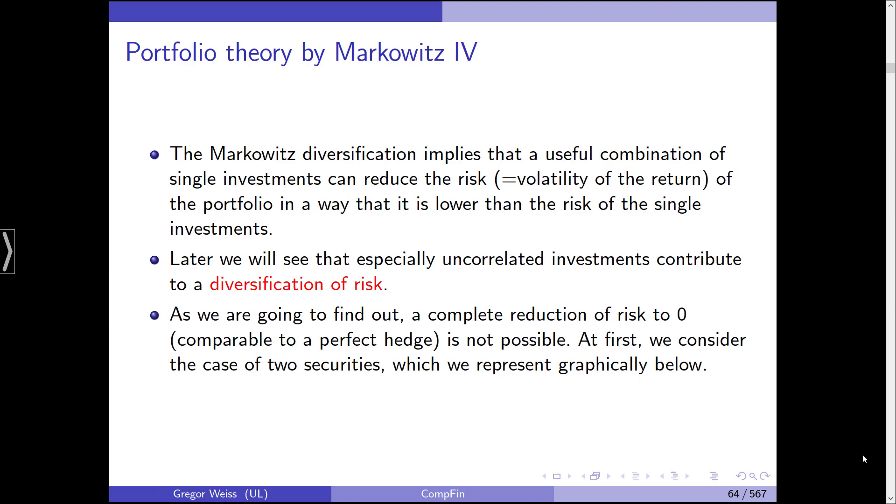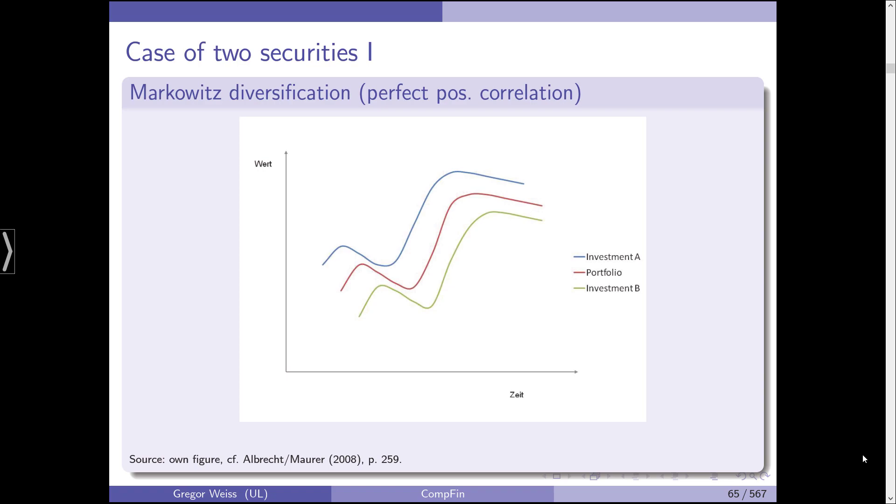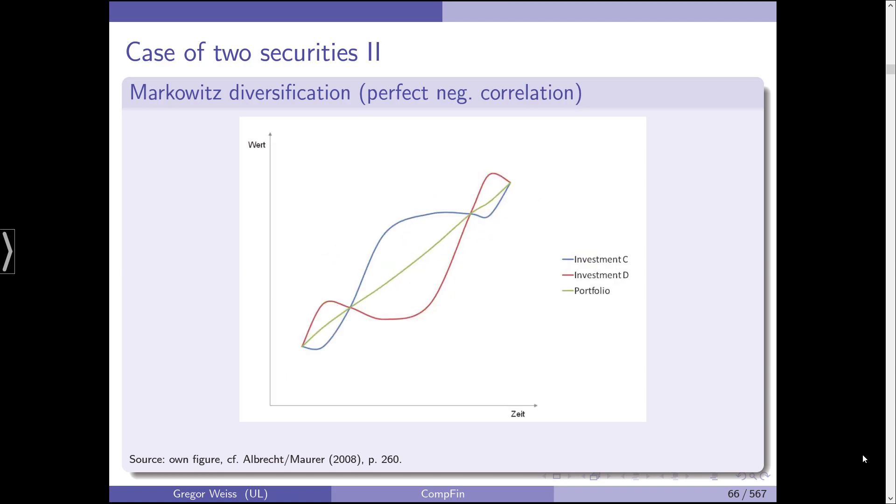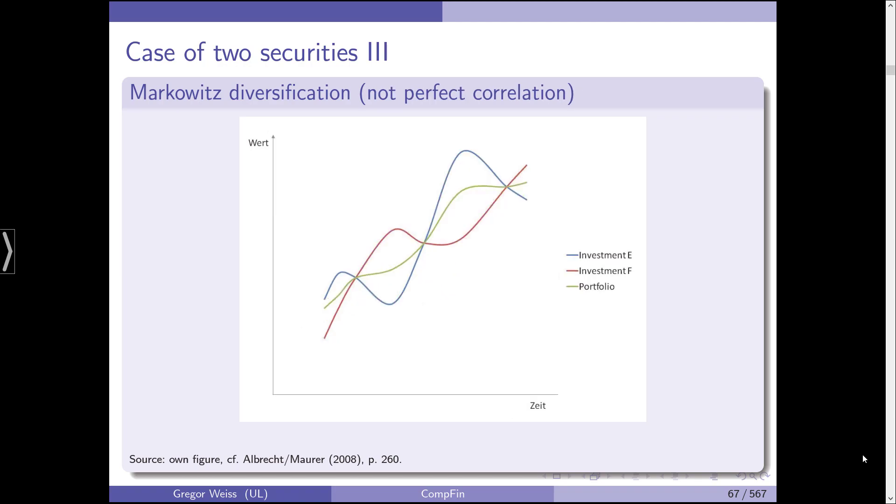And as we are going to find out, a complete reduction usually that is comparable to a perfect hedge is not possible unless you add derivatives. But at first we consider the case of two securities which we represent graphically below. So this would be perfect positive correlation, a correlation of plus one between investments A and B. And we have a portfolio in which each change of one is cancelled out by the other. And anything in between where we have a not perfect negative or positive correlation can look like this and we can smooth out the ups and downs of the returns in our portfolio.